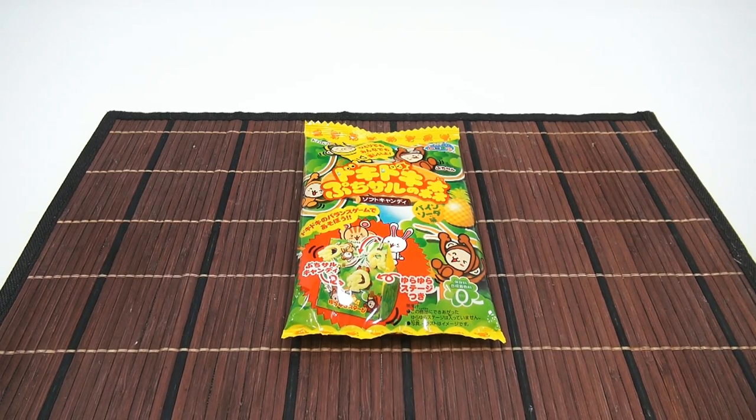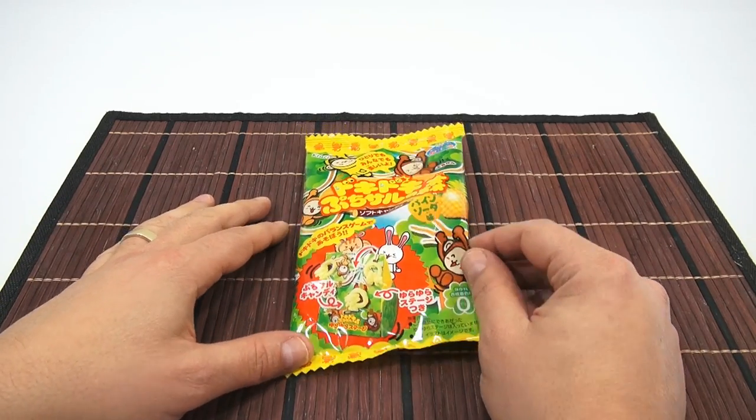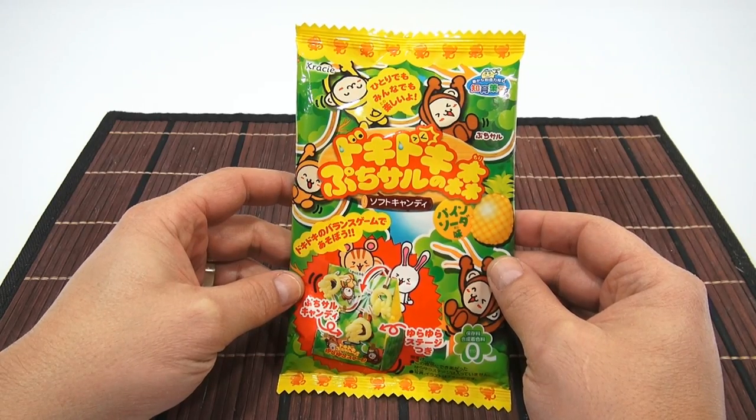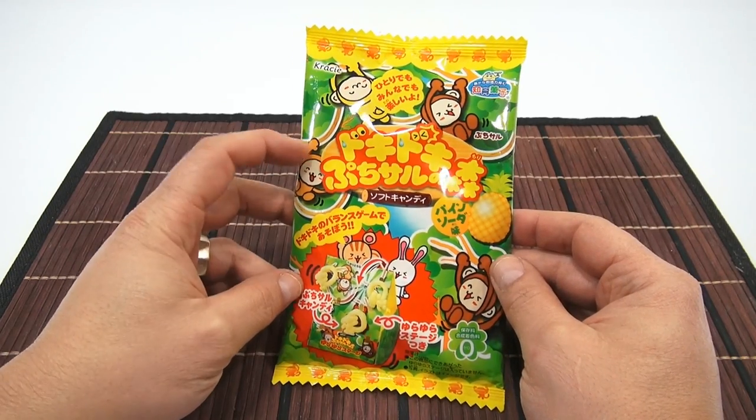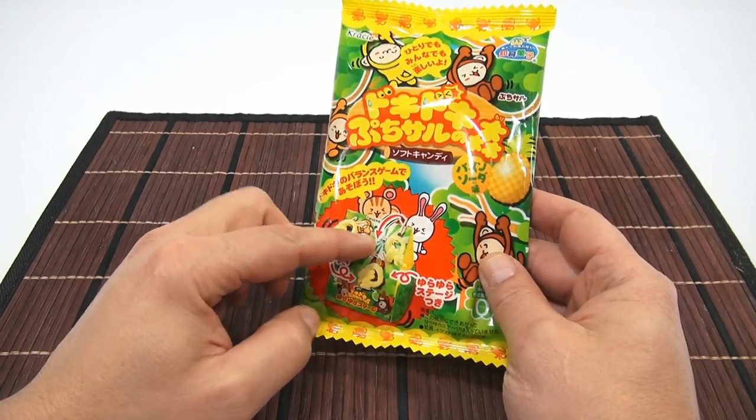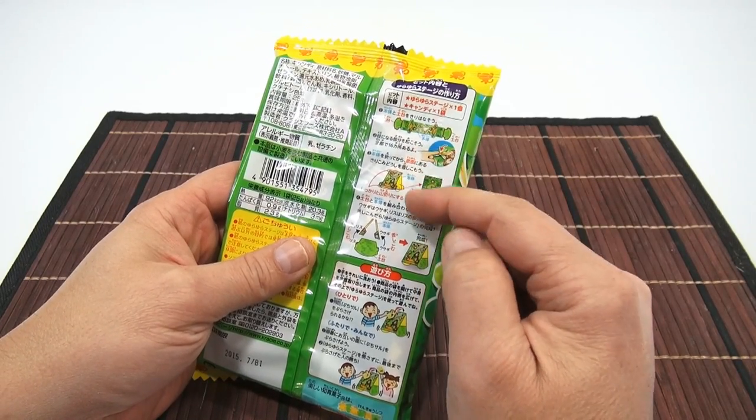This kit does not look like it requires any mixing or anything like that. It almost looks like our fishing game, but this one has monkeys. Looks like they're monkeys swinging from hooks. And I have to build some kind of platform here is what I see in the picture.